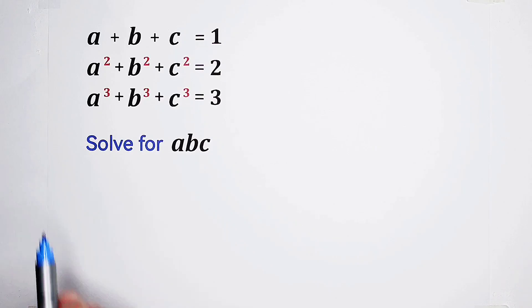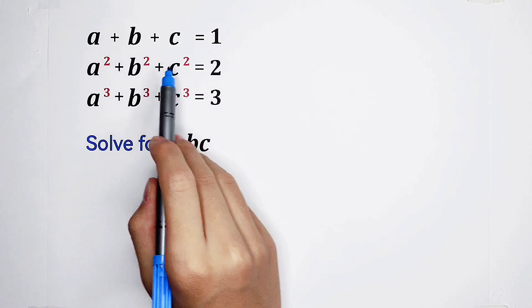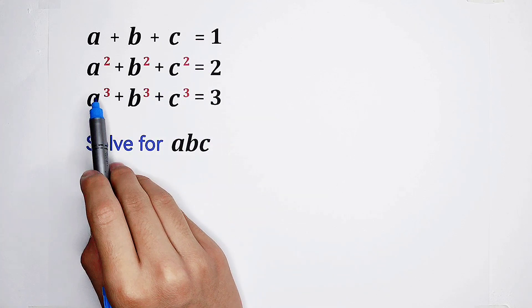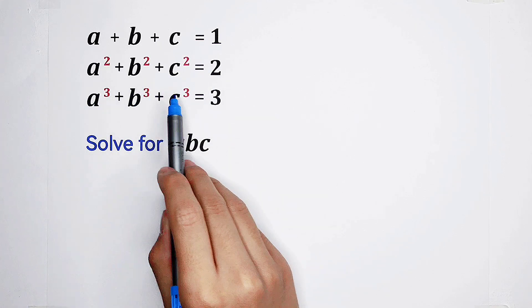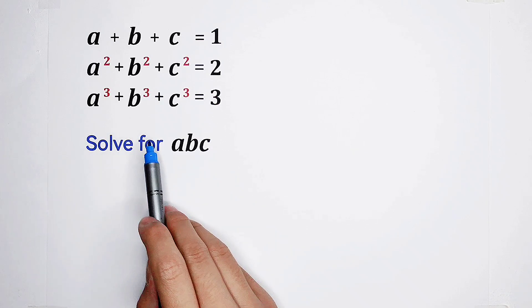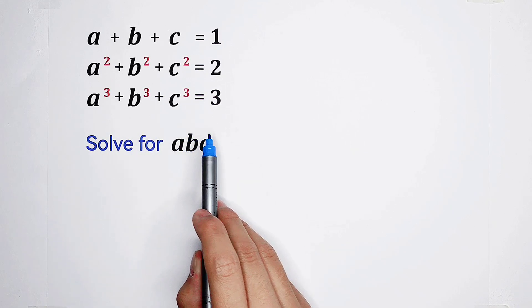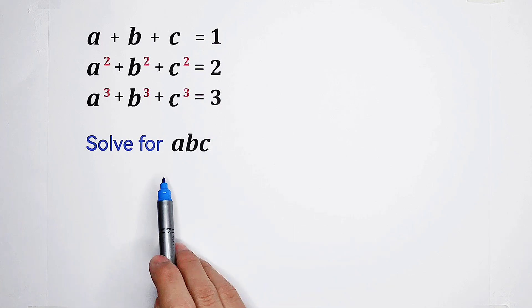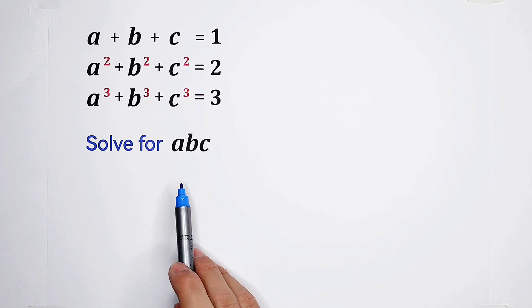A wonderful algebra question. The sum of a, b, and c is 1. The sum of a squared, b squared, and c squared is 2. The sum of a cubed, b cubed, and c cubed is 3. Solve for the value of the product of a, b, and c.